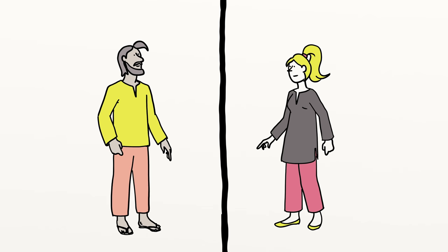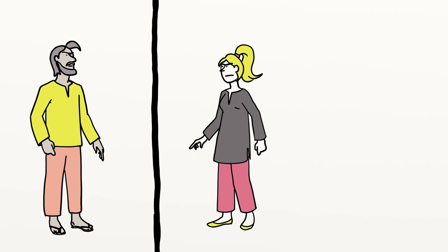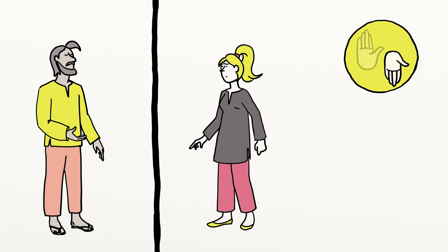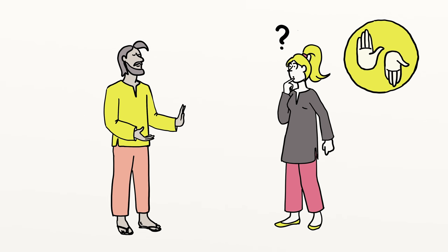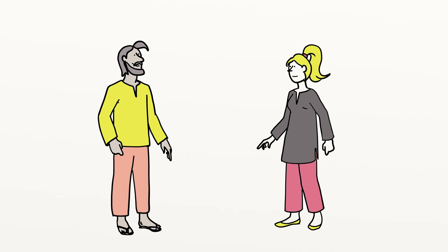Activist scholar Barbara Deming said that nonviolence has two hands. We can reach out to others, even as we put a stop to their harmful activities. In nonviolence, you fight injustice, not people.